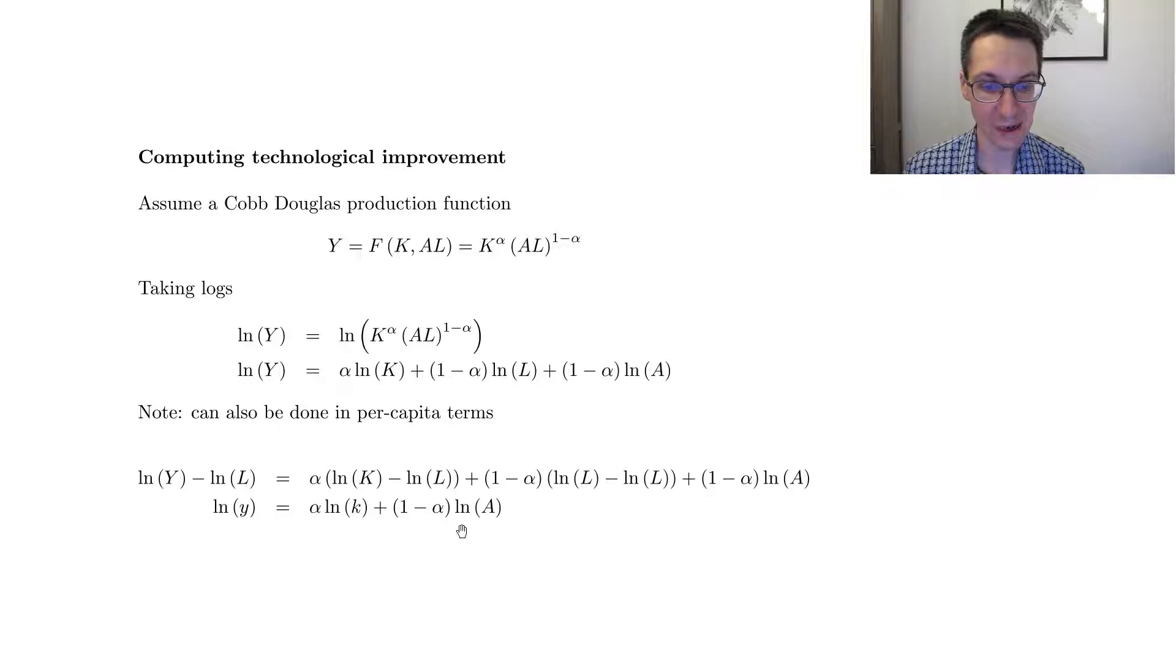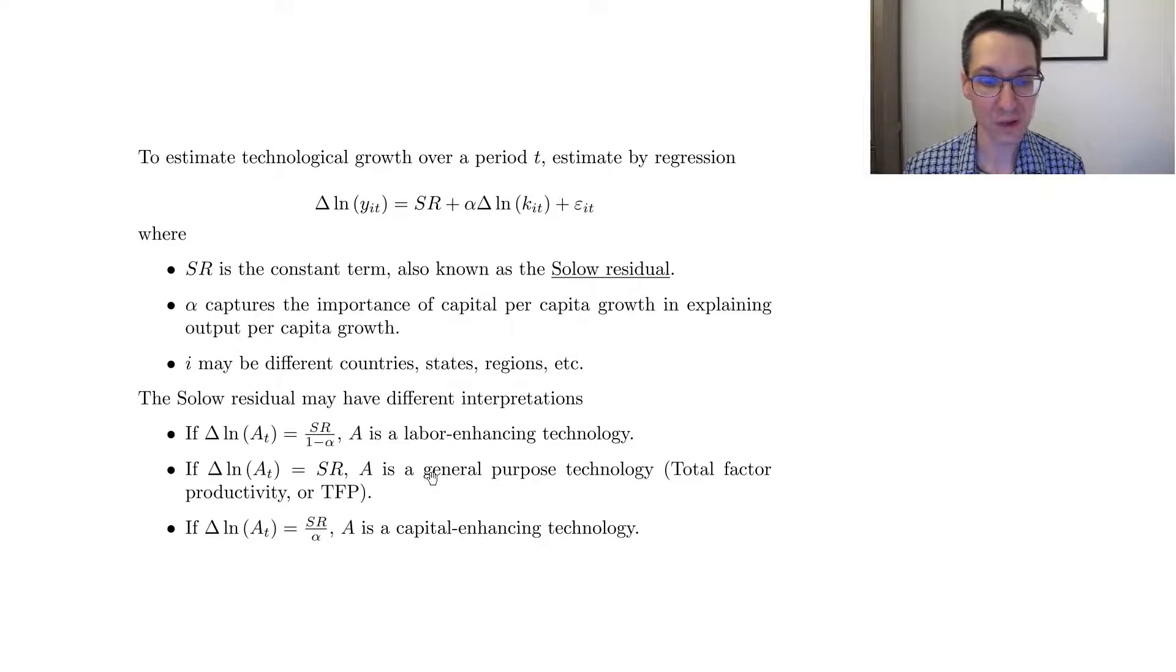How do I interpret what I got from my constant term here? Well, it depends what I assume the technology was. So let's just go back quickly here. I assume that this is how my technology entered the formula, 1 minus alpha log of A. So if this is SR, what I would have to do is divide it by 1 minus alpha, and then take the exponent, and I would get A. So in a sense, if I assume a labor-enhancing technology, I divide my Solow residual by 1 minus alpha.